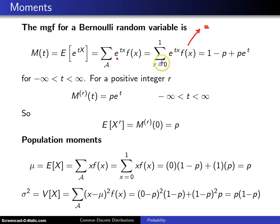This will be equal to, well when x equals 0 you get e^0 which is 1 multiplied by f(0), and you know that f(0) is 1-p, plus when x equals 1 you will get e^t and that will be multiplied by f(1), and f(1) is p.